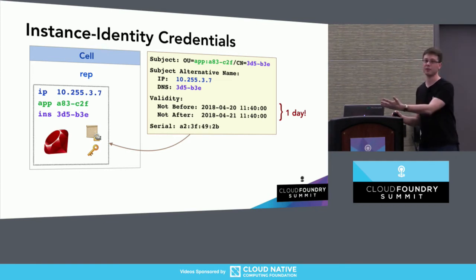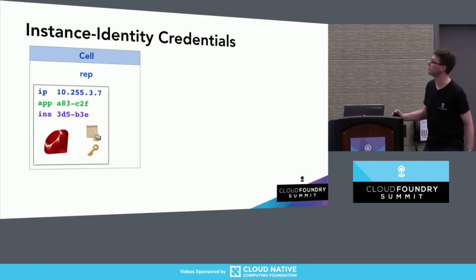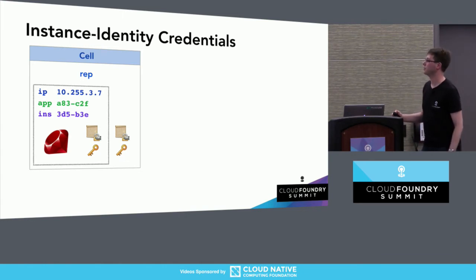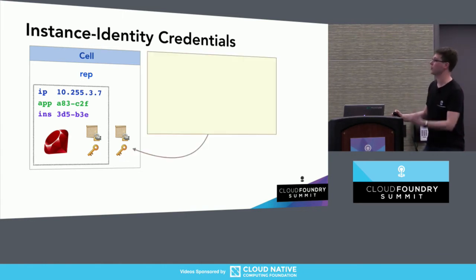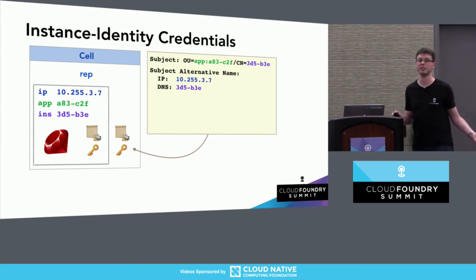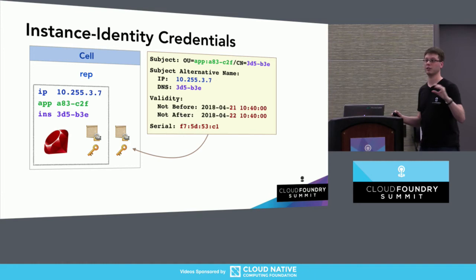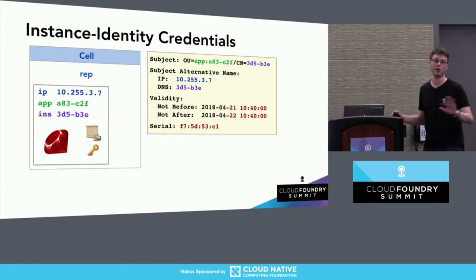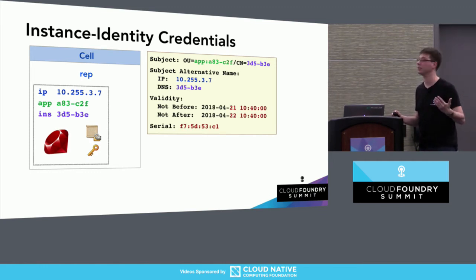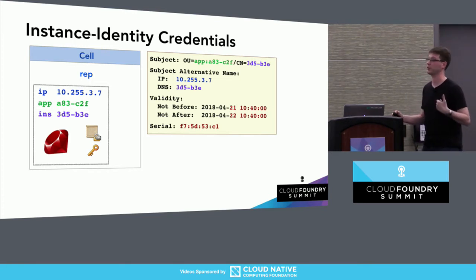You may be concerned about what happens when the certificate expires. The rep knows when it issued the certificate and knows that validity period. So before the previous one expires, it creates a new certificate with the same identifying information but a different overlapping validity period, and moves it into the container in place of the existing files. Application processes can either poll that location periodically to pick up new certificates, or set up a filesystem watch on those locations and receive a notification when the files change.